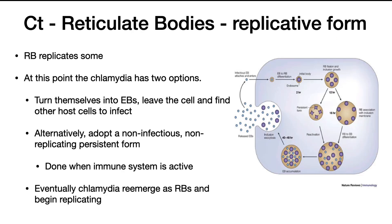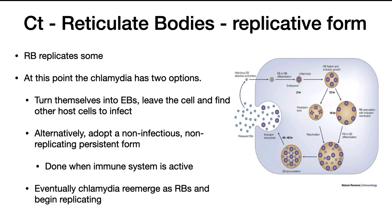The reticulate body is the replicative form — it makes copies of itself. At this point, chlamydia has two options. It can replicate, turn into elementary bodies, leave the cell, and seek other host cells to infect. Alternatively, it can adopt a non-infectious, non-replicating, persistent form when the immune system is actively attacking cells. In this case, it shuts down replication and hides from the immune system. Eventually, the chlamydia will reemerge as reticulate bodies and begin replicating again.